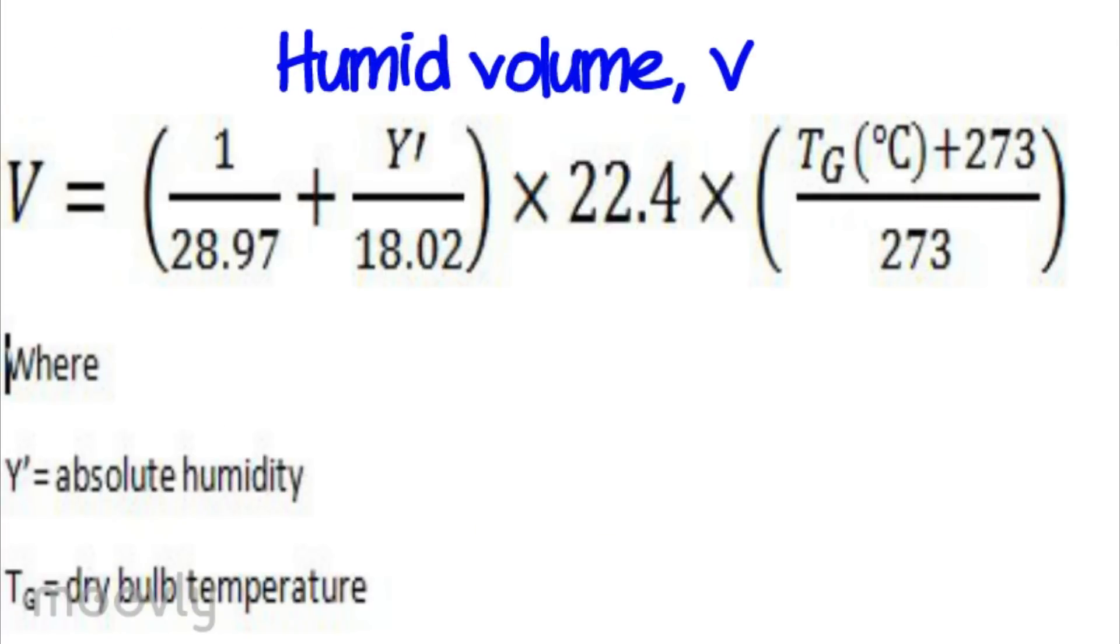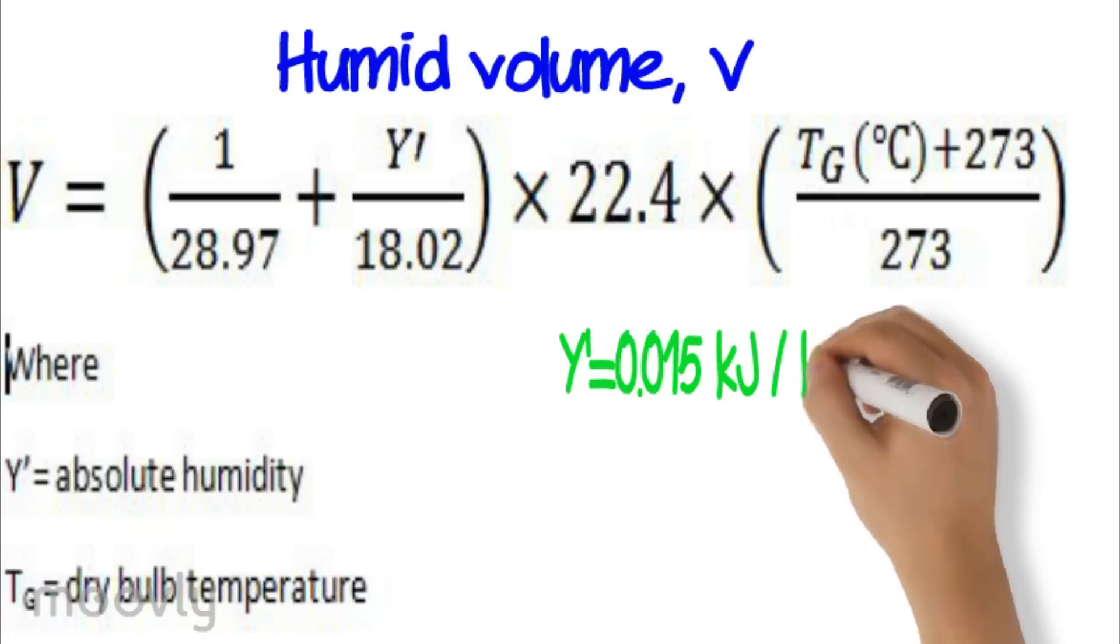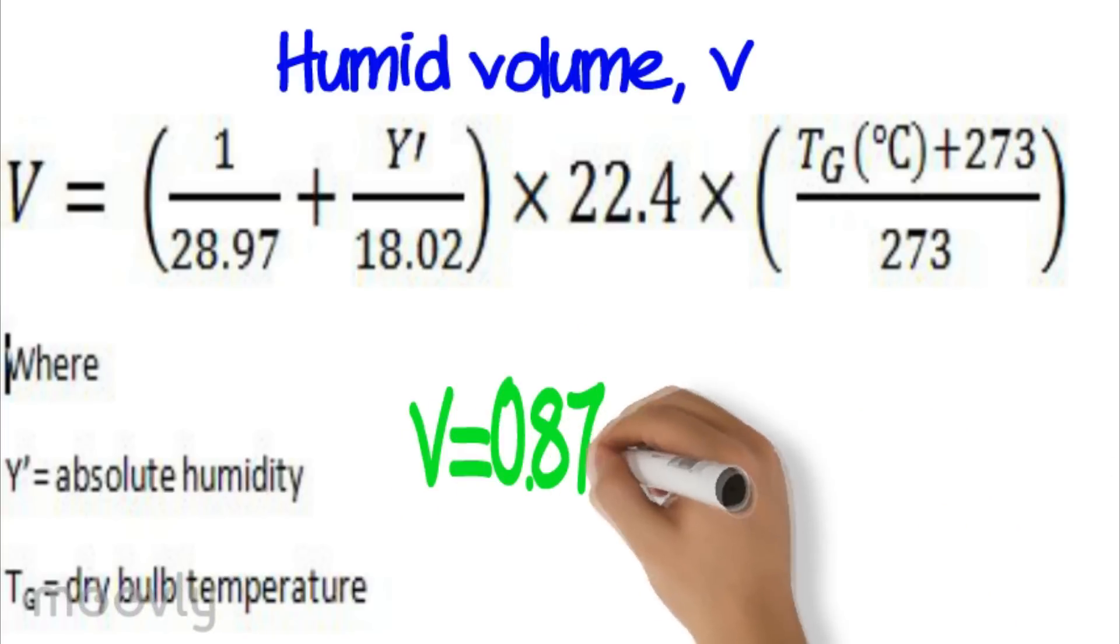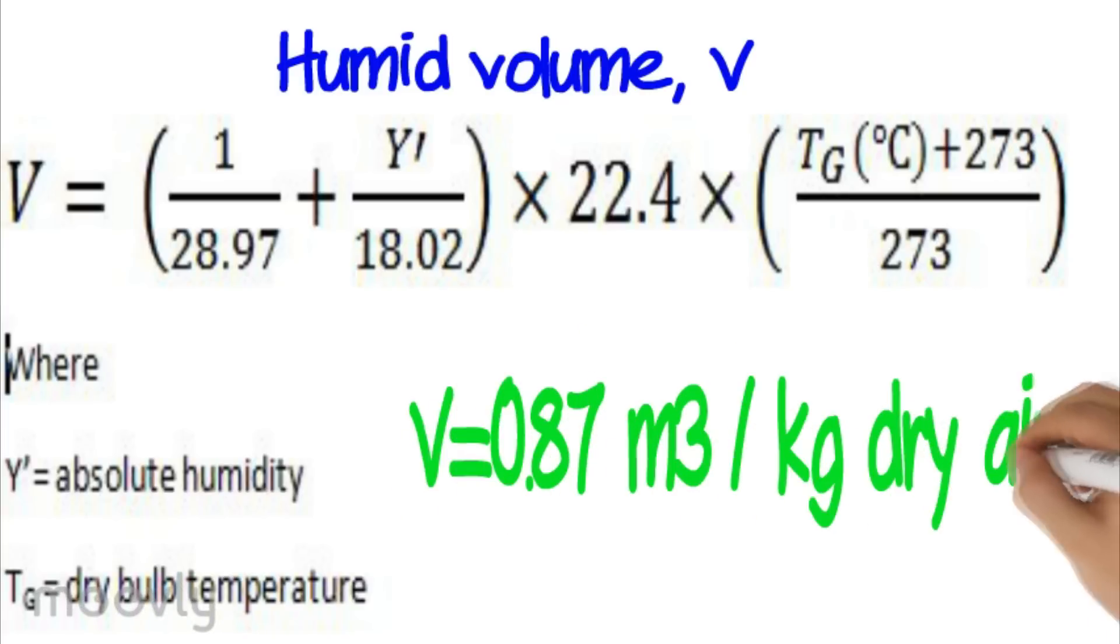Humid volume can be found using the formula by substituting absolute humidity of 0.015 kg per kg and dry bulb temperature of 27 degrees Celsius. Humid volume is 0.87 cubic meters per kg dry air.